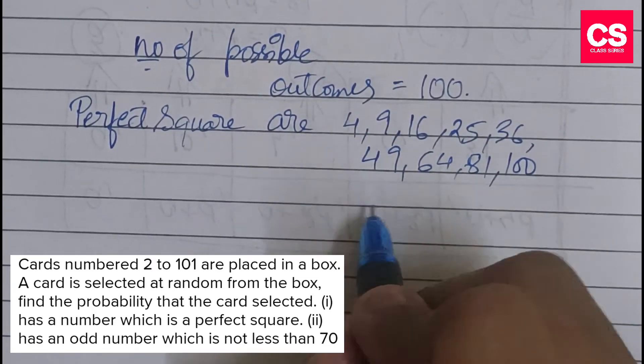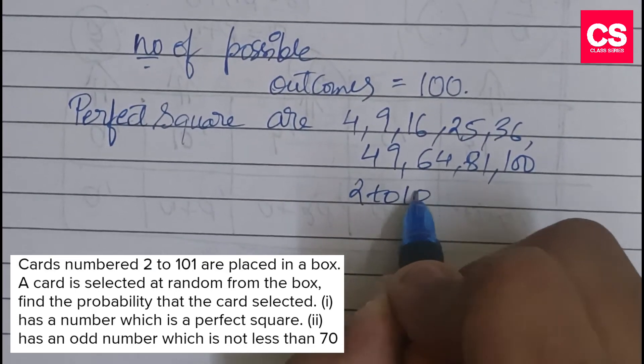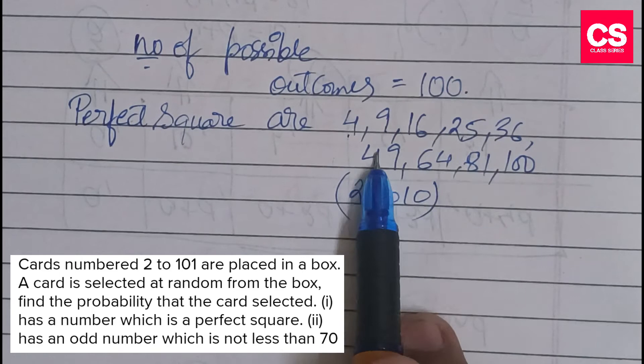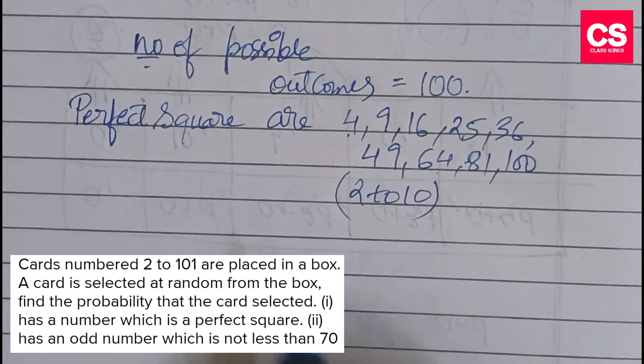Between 2 and 101, these are the perfect squares. Now how many are these? 1, 2, 3, 4, 5, 6, 7, 8, 9. Total 9, right?